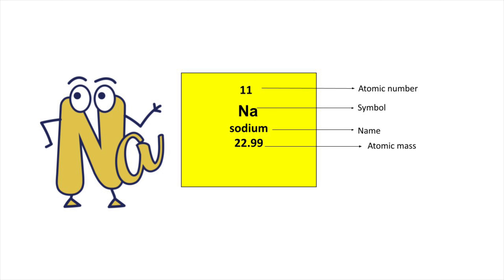To know valency we should know the atomic number. Sodium is in the first group, third period; its atomic number is 11. From the atomic number we can write the electronic configuration.